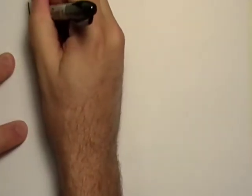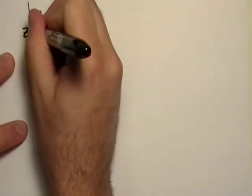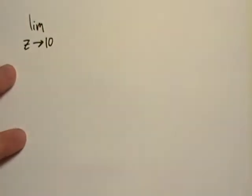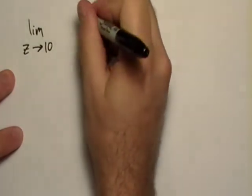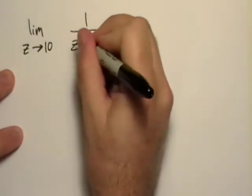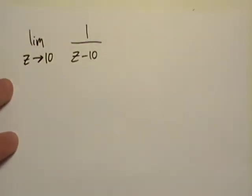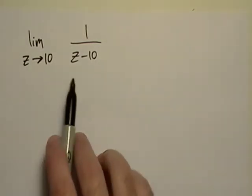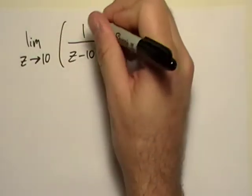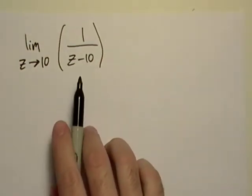Let's do another one. Let's take a look at the limit as z goes to 10, 1 over z minus 10. Ooh, a little tricky. Well, again, before we even really do anything with the limit, let's look at this function.